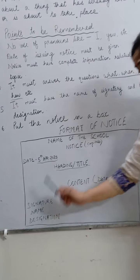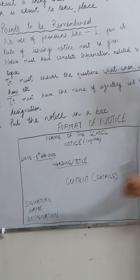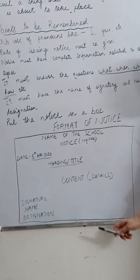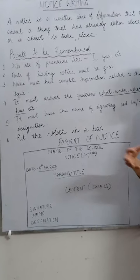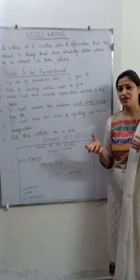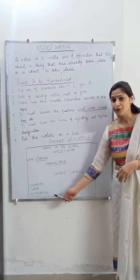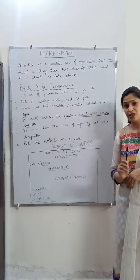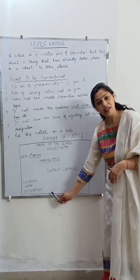At the very left-hand side corner at the end, you have to write the signature, then the full complete name, and then the designation. For example, in a company or corporate office, if the secretary is writing, then secretary is the designation. In a class, if a monitor is writing the notice, the designation will be monitor or head girl. You write the designation at the end only if it is mentioned in the question.